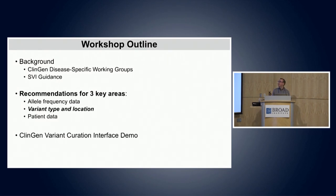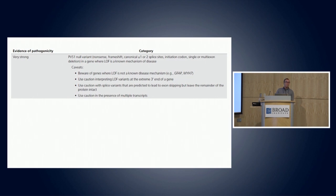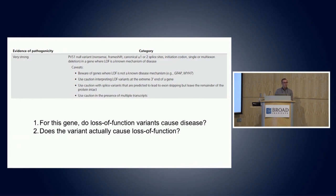Next, criteria dealing with variant type and location. Within the guidelines, there was only one criterion given a very strong pathogenic evidence level: PVS1, for null variants — nonsense, frameshift, canonical ±1 or 2 splice variants, initiation codons, and exon deletions — in a gene where loss of function is a known mechanism for disease. There are two important components: first, do loss of function variants in this gene actually cause disease? Second, does this specific variant actually cause loss of function? Both must be met to apply this criterion.